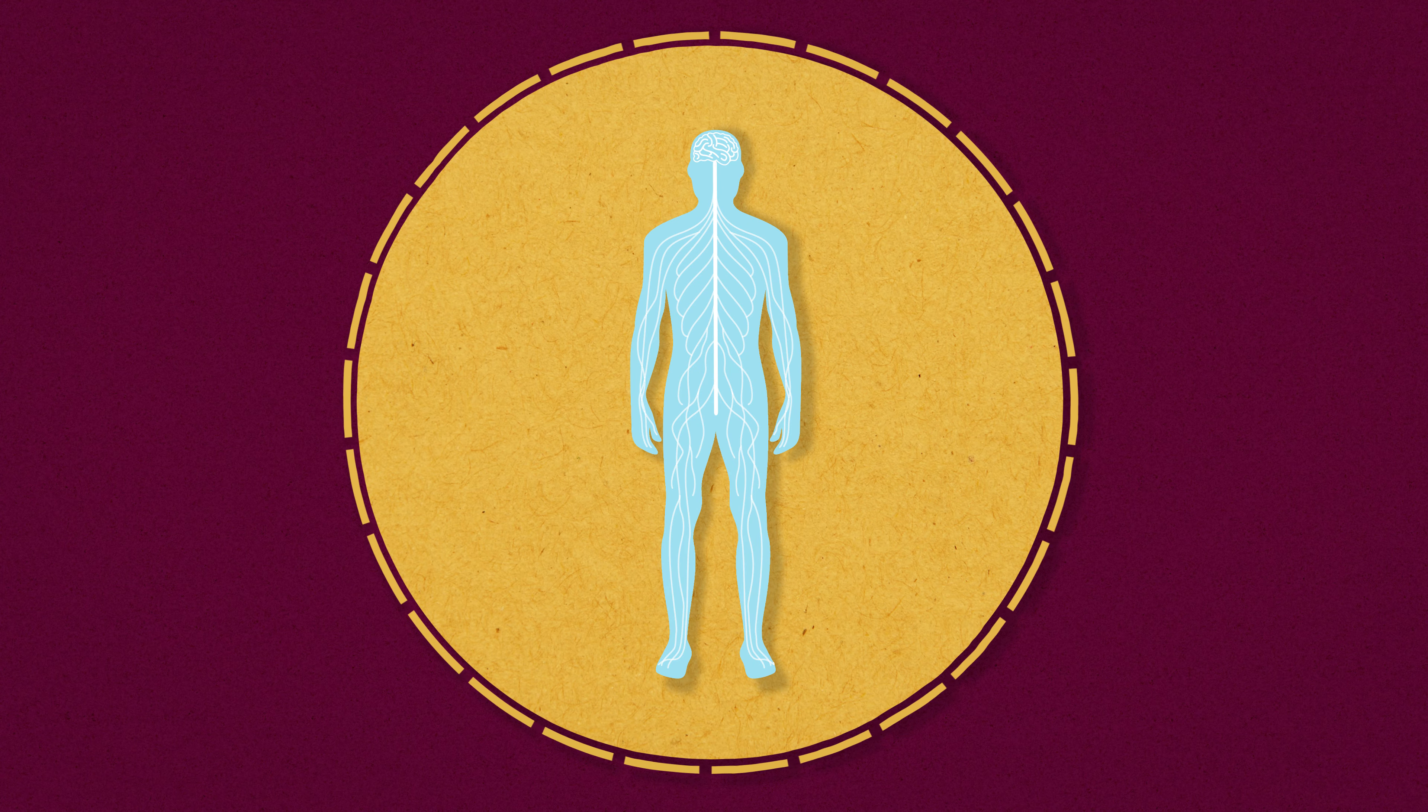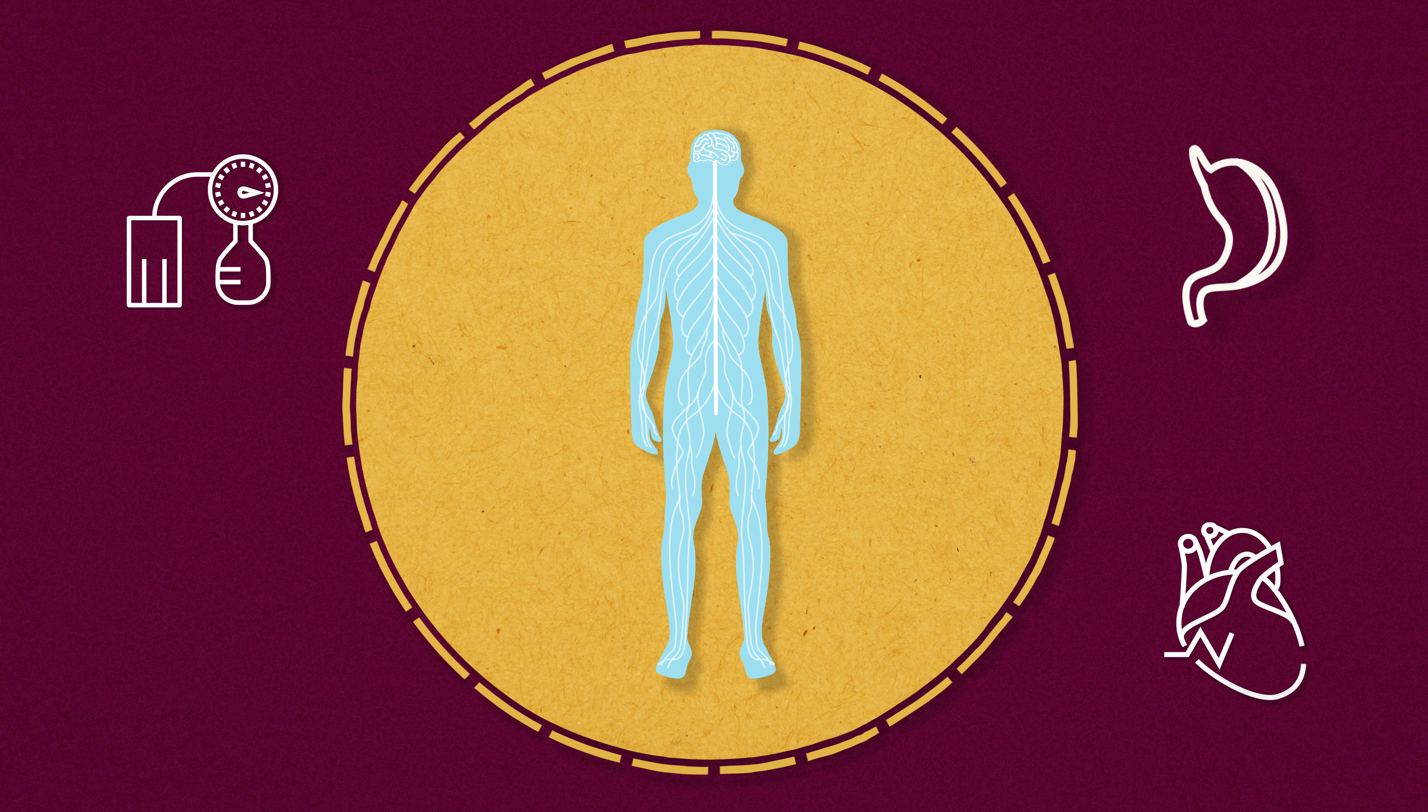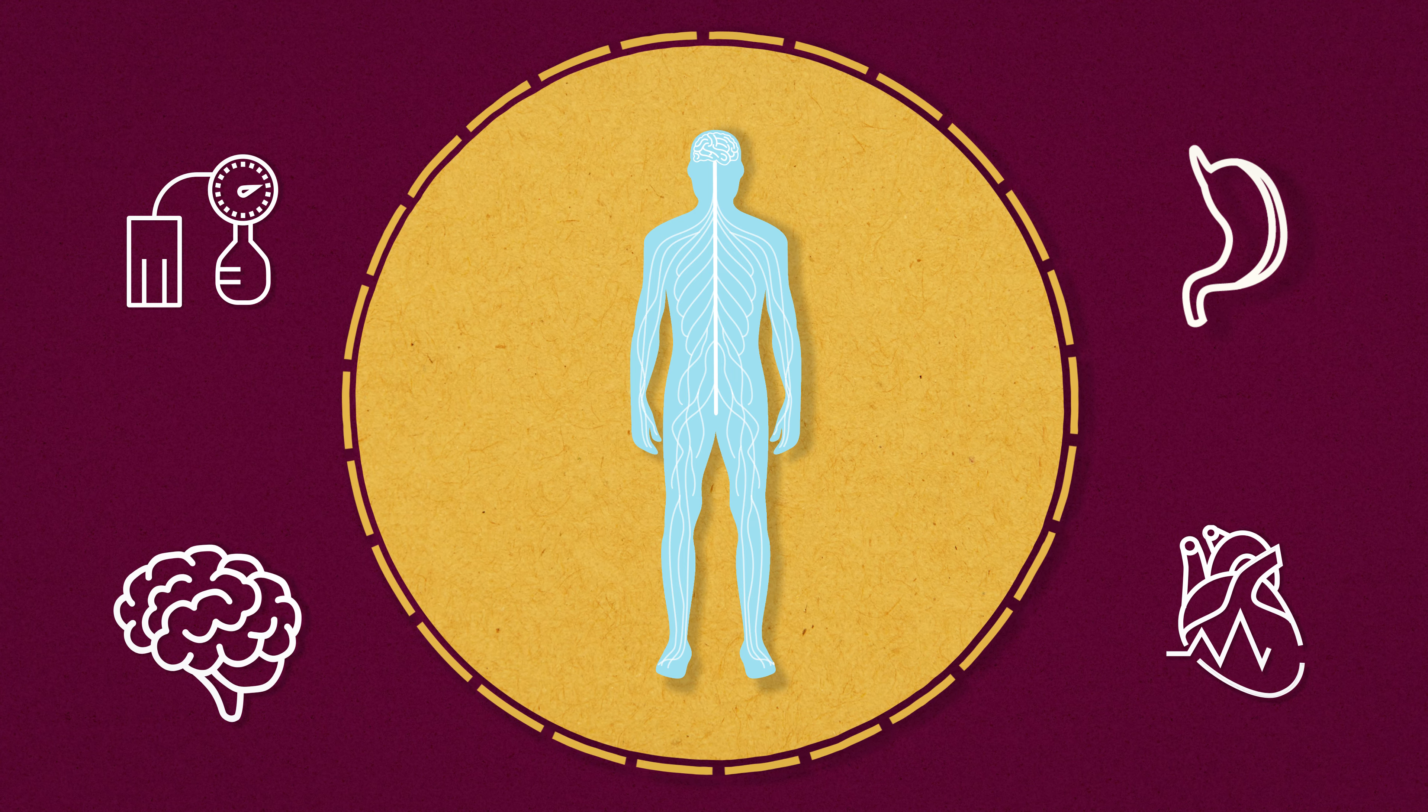Interoception is involved in everything from telling us when we're hungry, to keeping our blood pressure and heart rate steady. It even appears to influence our moods and emotions.